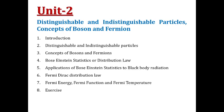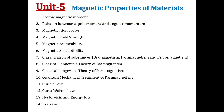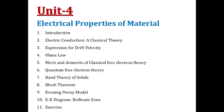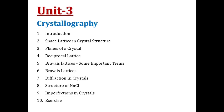The next four units — Unit 3, Unit 4, Unit 5, and Unit 6 — belong to the branch named Solid State Physics, which is also one of the branches of physics. Unit 3 is Crystallography. The contents are: introduction, space lattice and crystal structure, planes of a crystal, reciprocal lattice, Bravais lattice, some important terms, diffraction in crystals, structure of NaCl, imperfection in crystals, and exercise. These are all the contents under crystallography.